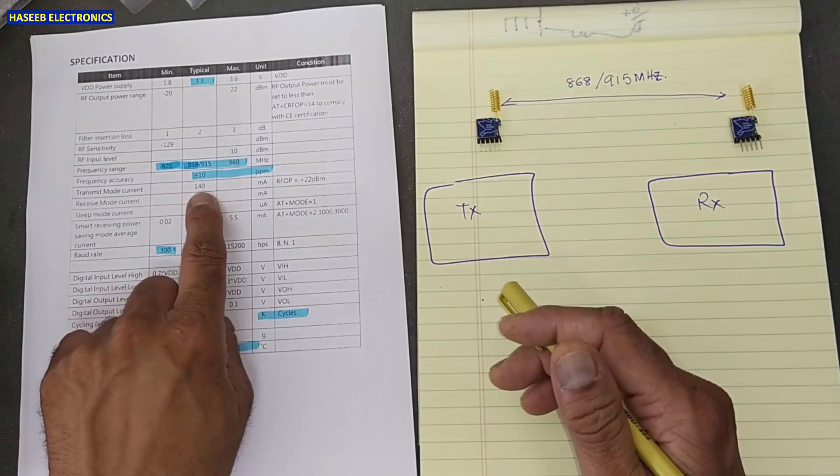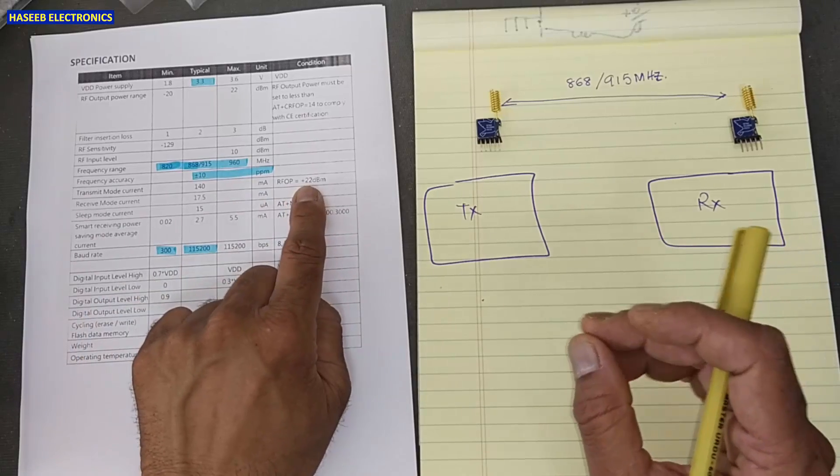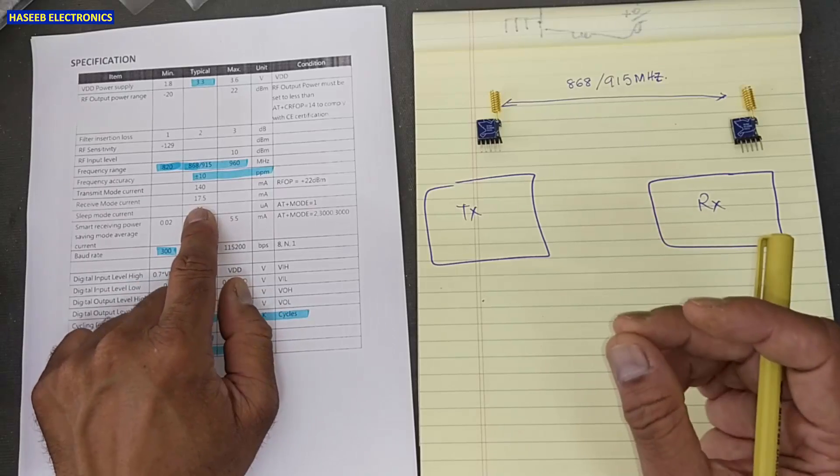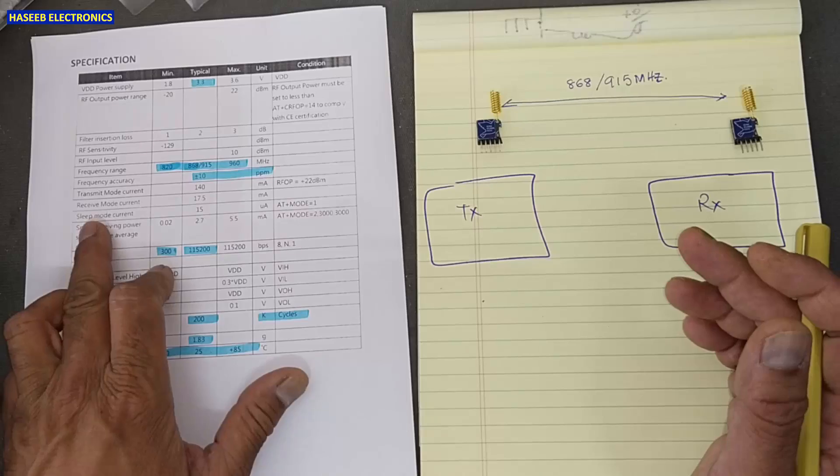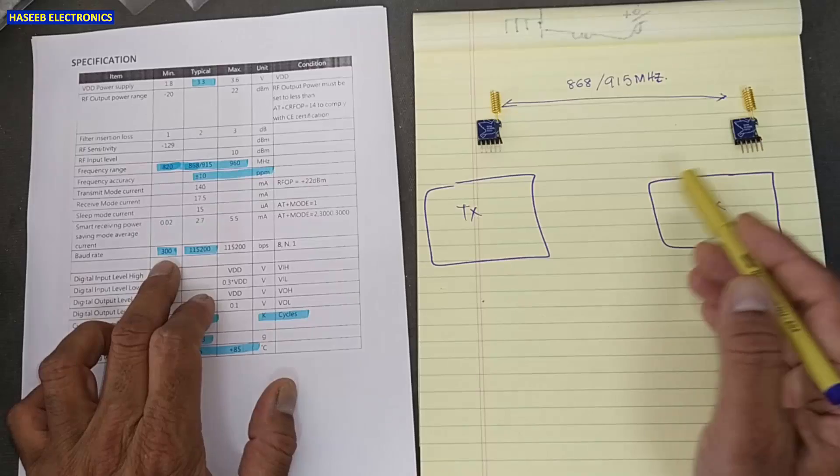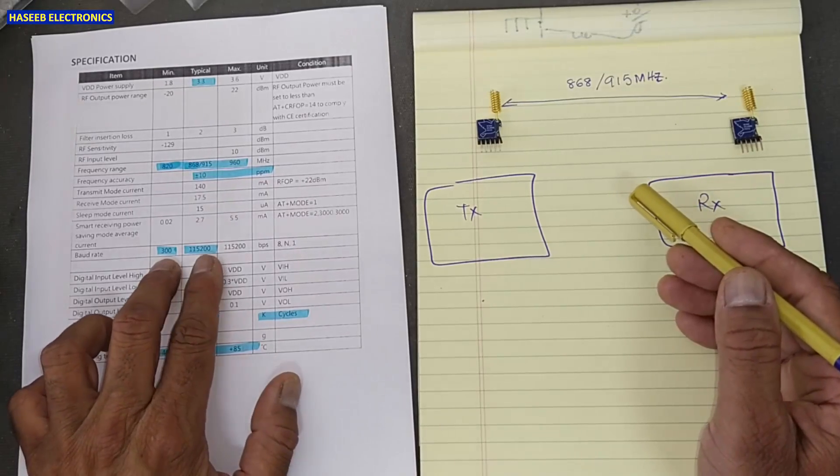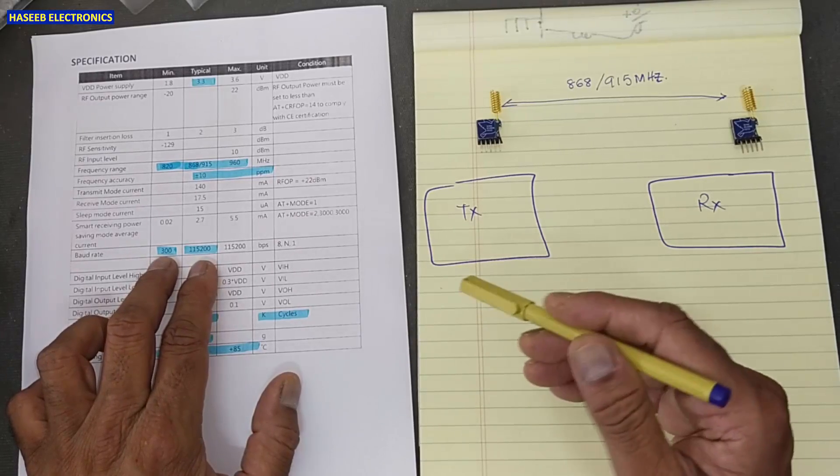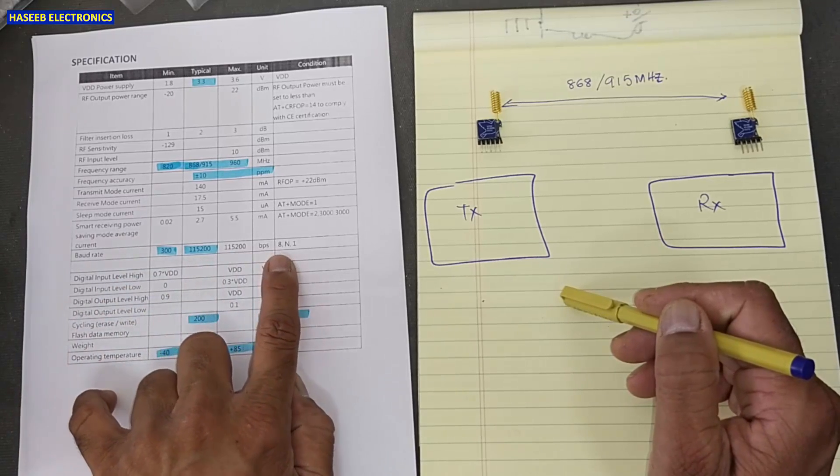Transmit mode current rate: 140 milliampere at maximum output power. In receiver mode, it will consume just only 17.5 milliampere. In sleep mode, 15 microampere. Baud rate, when it is communicating with any processor, any computer, at that time it can communicate at these rates: 300 bit per second to 115200 bps.